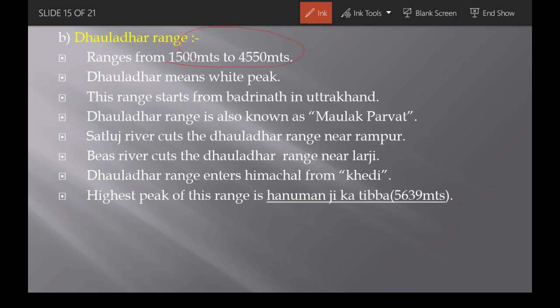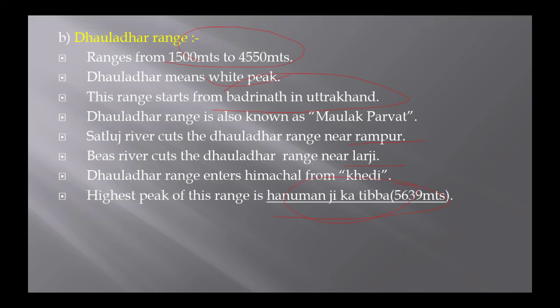Dhauladhar is also called Maulakh Parvat, just as Shivaliks are called Mainak Parvat. Dhauladhar cuts the Sutlej River at Rampur and the Beas River at Larji. The highest peak of Dhauladhar is Hanuman ji ka Tibba at 5,639 meters. The Great Himalayas are also called the Alpine Zone, ranging from 5,000 to 7,000 meters. This range is mainly found in Kinnaur district, Pangi tehsil of Chamba, and some parts of Lahaul-Spiti.